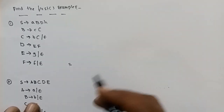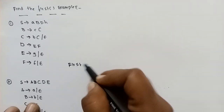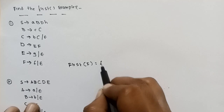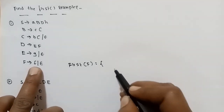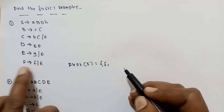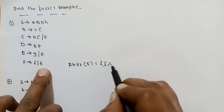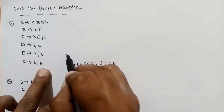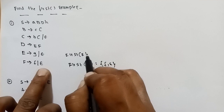So First of F — calculate First of F. F maps to a terminal, so the terminal is the First of F. F also stands to Epsilon, so Epsilon is in First of F. Next, calculate First of E.